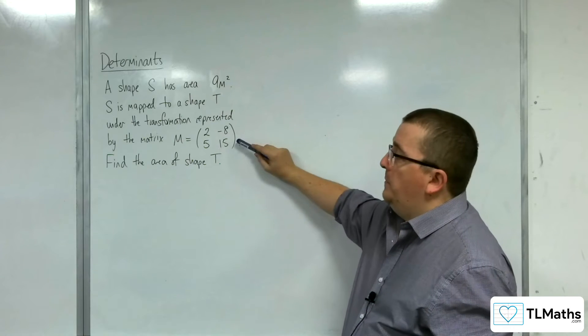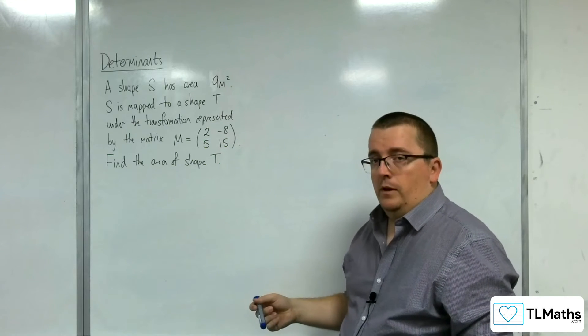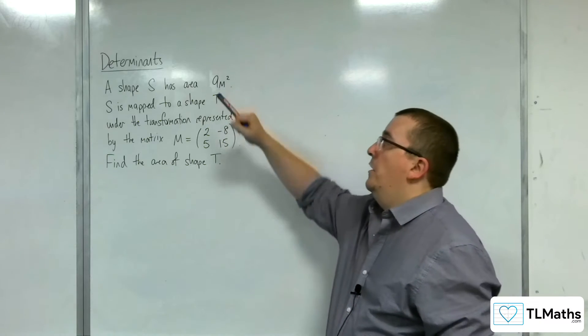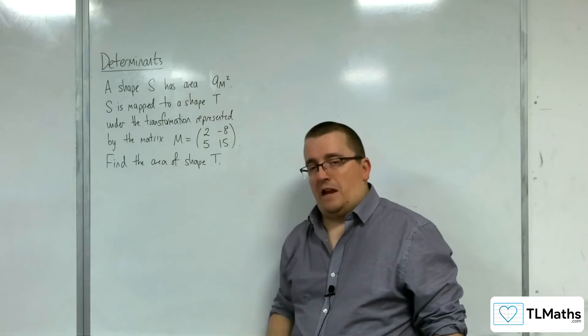So if we could work out the determinant of matrix M, then whatever that is, we can multiply that by the 9 square metres, and then we've got the area of shape T.